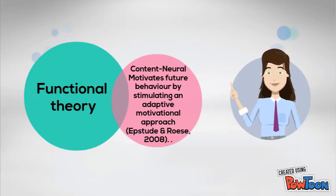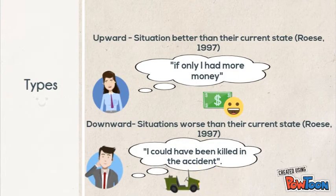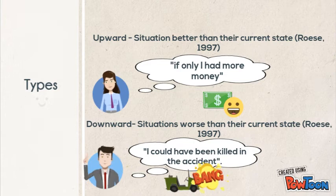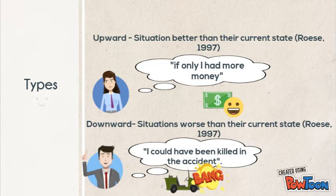There are six types of counterfactual thinking. Upward counterfactuals are when you think of a situation better than your current reality, and downward counterfactuals are when you think of a situation worse than your current reality.